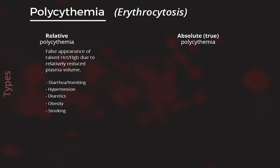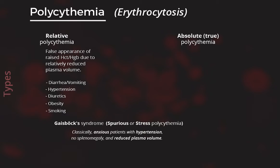Here I want to mention an exam favorite syndrome, Gaisböck syndrome, also referred to as spurious polycythemia or stress polycythemia. Classically, this was described as polycythemia in anxious patients with hypertension, no splenomegaly, and reduced plasma volume. However, hypertension with diuretic use and smoking may account for the relative polycythemia in many of these individuals.